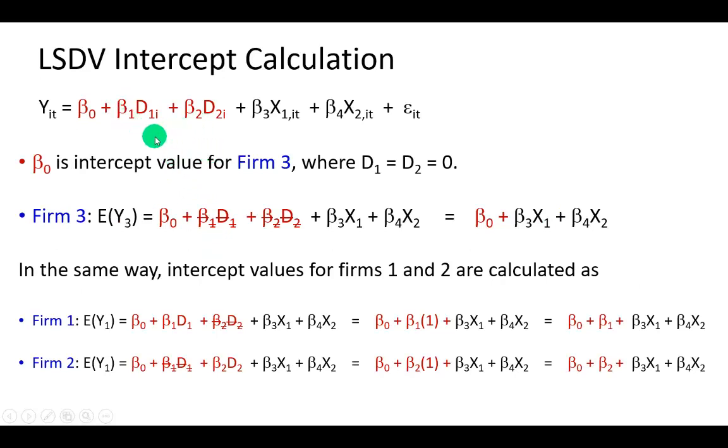Taken individually, beta sub 1, which is the coefficient for D1, the dummy variable for firm 1, is actually calculating the difference between the intercept value for firm 1 and the intercept value for the reference firm.